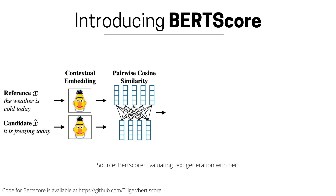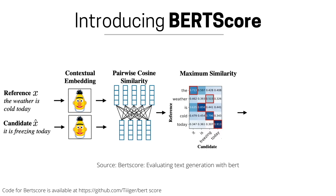Once we have the final embeddings for each of these words, we do an n-squared computation by calculating the similarity for each word in the reference against each word in the candidate set. This is how the similarity matrix would look like.